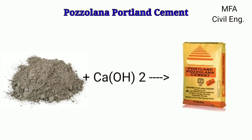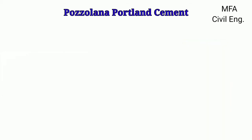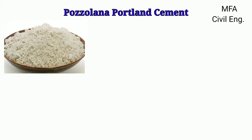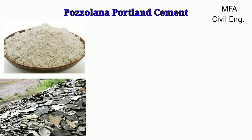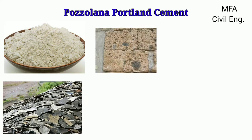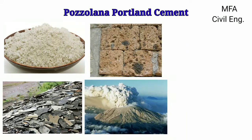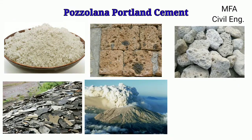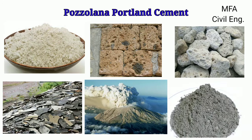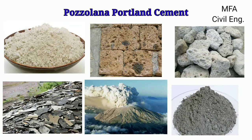For the manufacturing of Portland Pozzolana Cement, pozzolana materials such as diatomaceous earth, opaline shells, tuffs, volcanic ash, pumice stones, and fly ash are used in the manufacturing of cement.